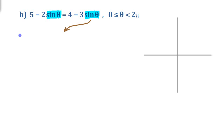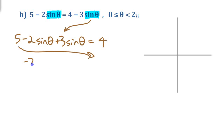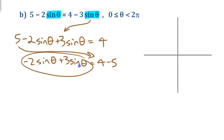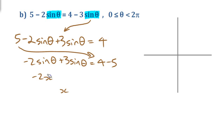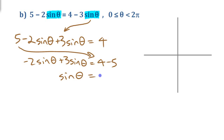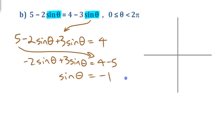I would start by gathering all the sine theta terms on the same side. Move that 3 sine theta over: negative 2 sine theta plus 3 sine theta equals 4. Then move that 5 to the other side: negative 2 sine theta plus 3 sine theta equals 4 minus 5. Adding those like terms — just like negative 2x plus 3x equals x — gives sine theta equals negative 1.